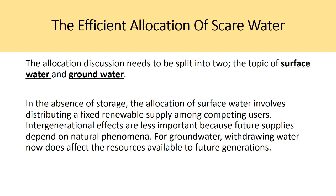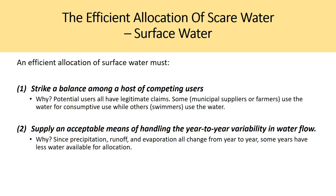The allocation discussion needs to be split into two topics: surface water, which is renewable, and groundwater, which is a depletable resource. In the absence of storage, the allocation of surface water involves distributing a fixed renewable supply among competing users. Intergenerational effects are less important because future supplies depend on natural phenomena. For groundwater, withdrawing water now does affect resources available to future generations because it won't recharge.